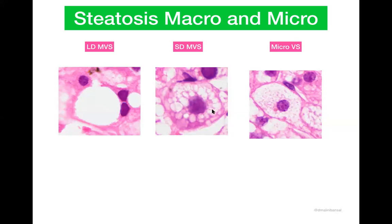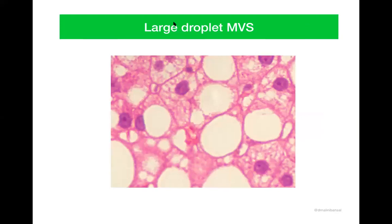Let us discuss each of these different kinds of steatosis seen in the liver. In large droplet macrovesicular steatosis, the fat vacuole seen in the liver cell is going to be a large vacuole and it will occupy more than half of the cytoplasm of the liver cell. The nucleus is going to be pushed to one side of the cell.